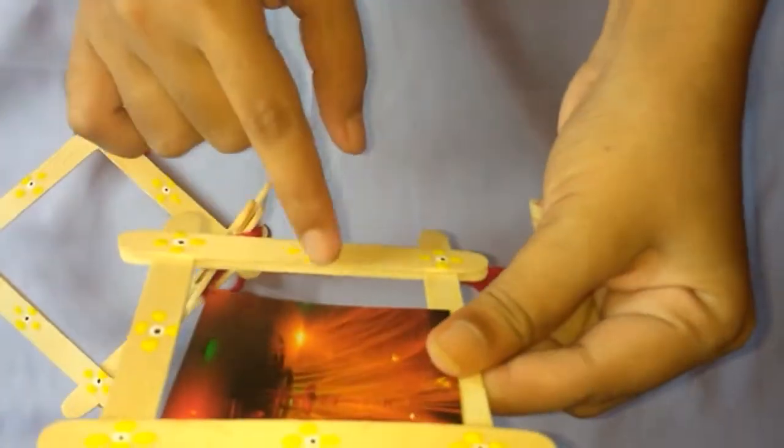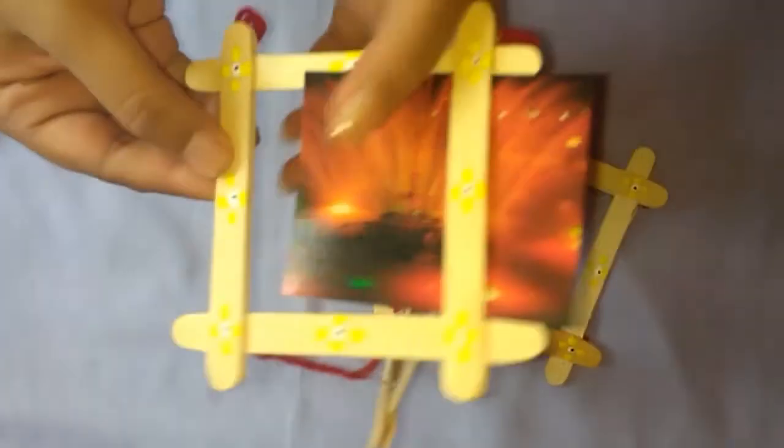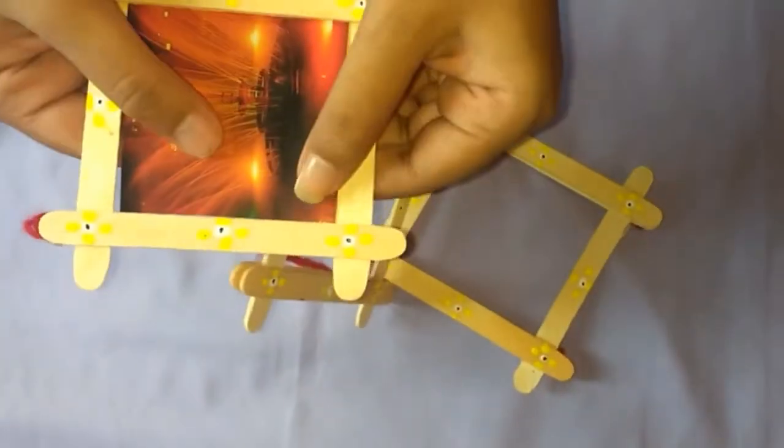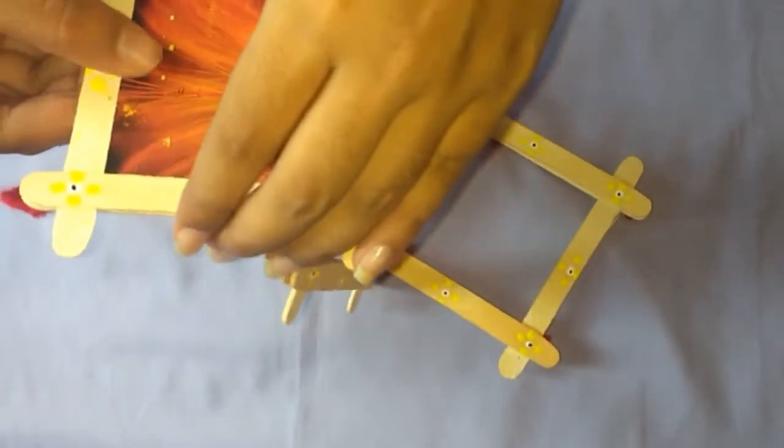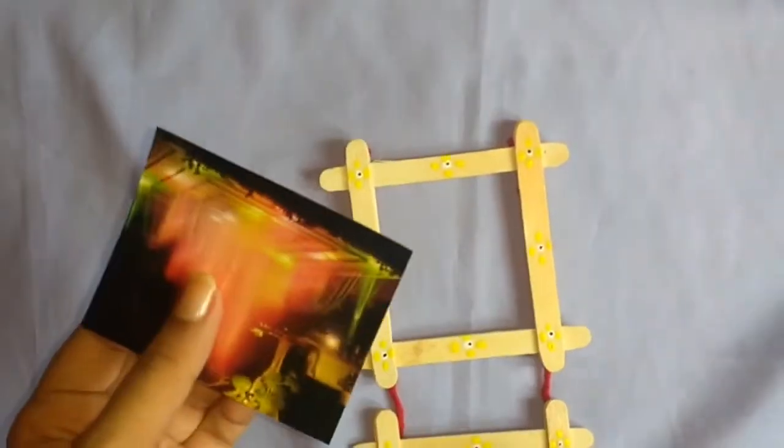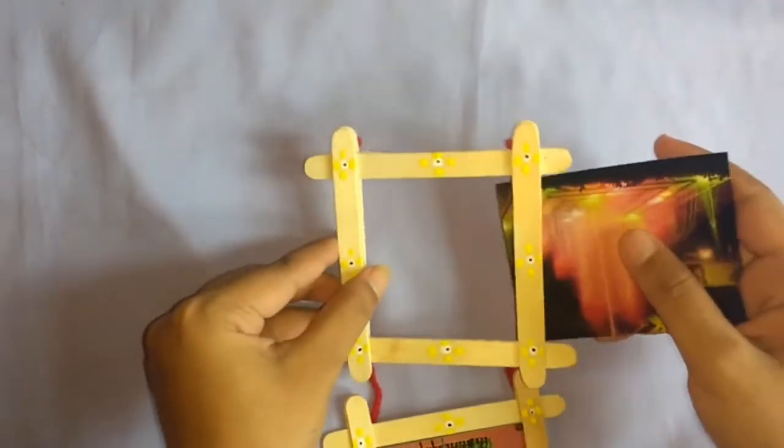Make sure that the photo goes into the slit that we created on the other end. This way the photo won't fall off the frame. In the same way, attach all the three photos.